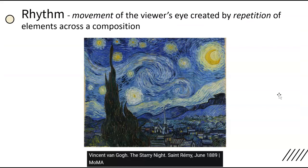Rhythm is a term we are familiar with in music, but sometimes have a hard time pinning down in visual art. It combines repeated elements with a sense of movement. Think of rhythm as the element that makes your eyes dance across a painting like Van Gogh's Starry Night.